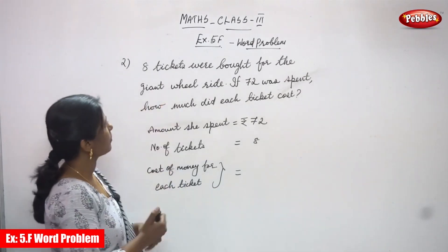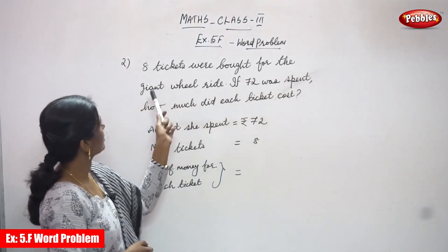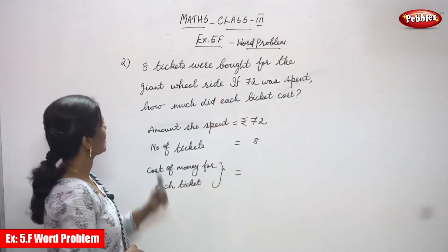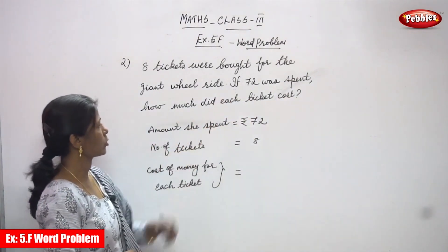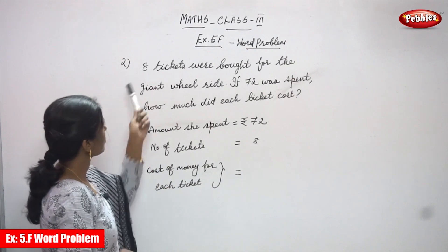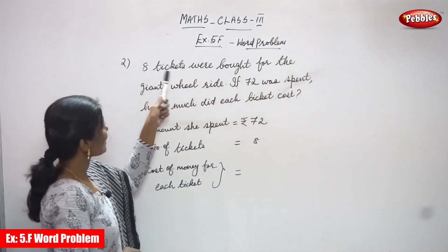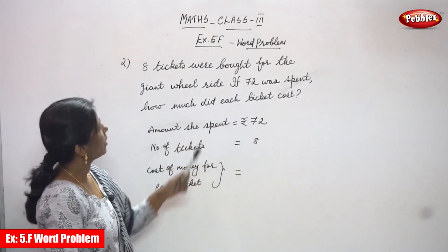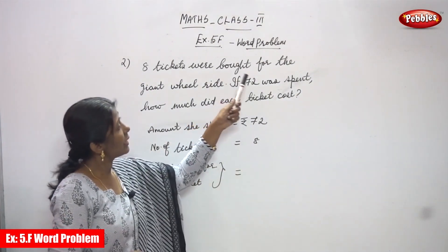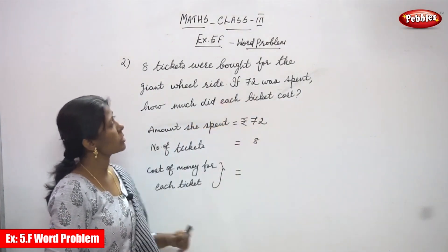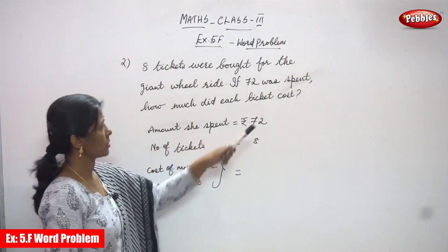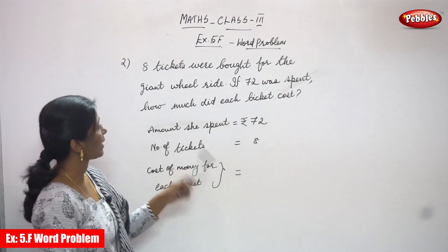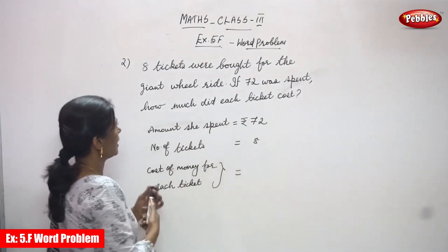8 tickets were bought for the giant wheel ride. If 72 rupees was spent, how much did each ticket cost? Amount she spent for 8 tickets.